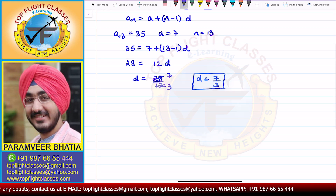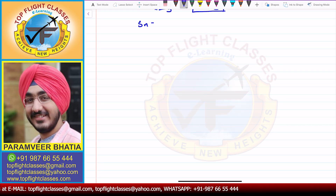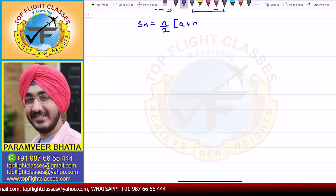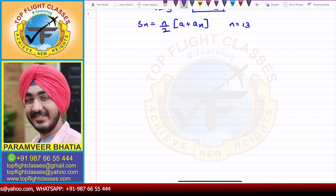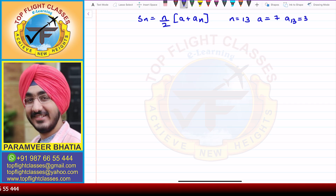Now we need to find S13. The sum of N terms formula is given by N by 2 times A plus AN. Here, N is equal to 13, A is equal to 7, and A13 is given as 35.